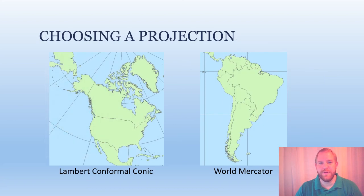The projection a cartographer chooses depends on the area that is being mapped. North America is a very wide continent, and so a conical projection will create a more accurate map. South America, on the other hand, is much longer than it is wide, so a cylindrical projection such as the Mercator is perfect for this map.